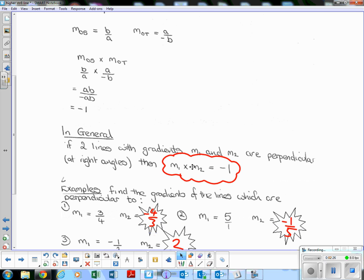All right, so we know if we multiply them together, we get negative 1. So find the gradients of the lines which are perpendicular to M1, which equals 3 quarters. So if the gradient is 3 quarters, what is the perpendicular gradient? Well, we've got the answer in already, negative 4 over 3, but why is that?